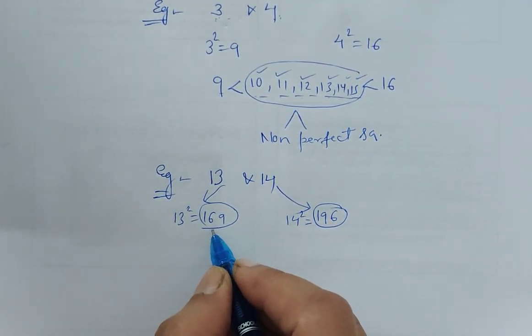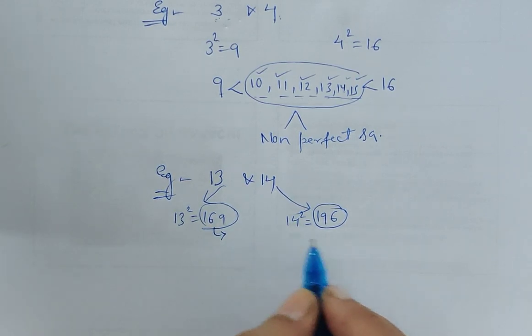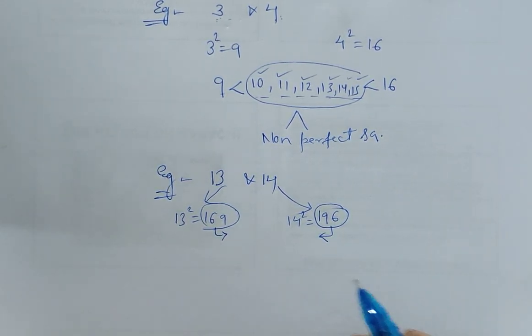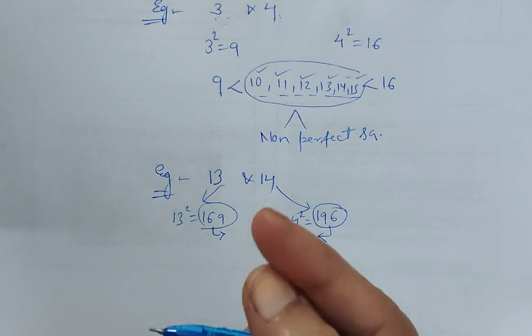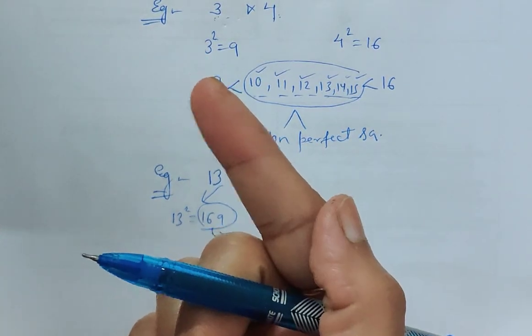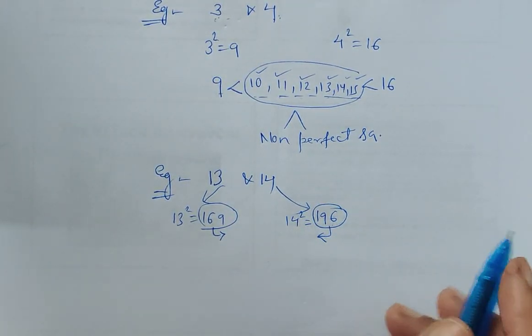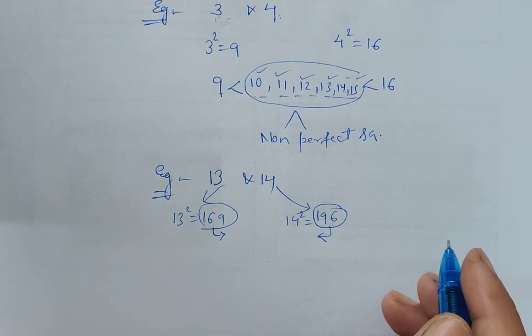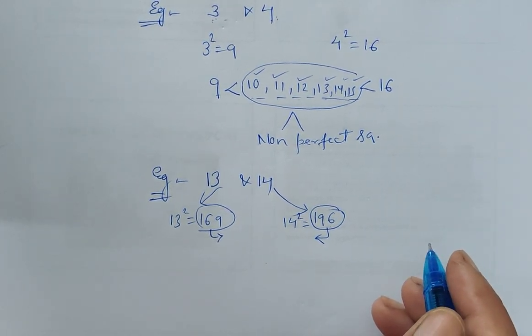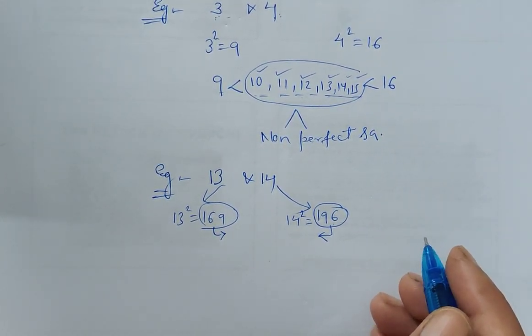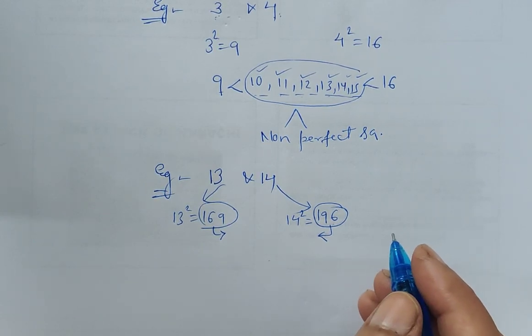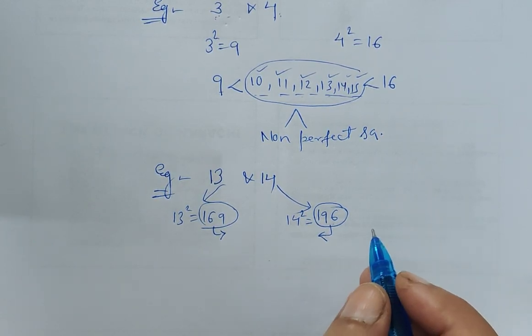Not at all. Who will do this tedious work of writing 170, 171, 172 till 195? So in the chapter of class 8 squares and square roots, we have a property which eases our way of finding such non-perfect squares.